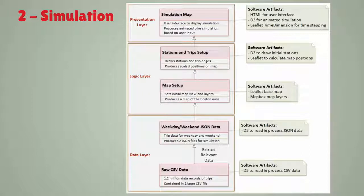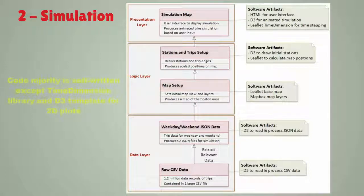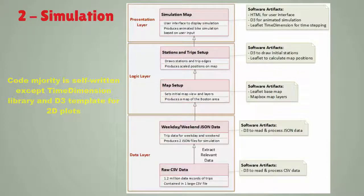The second component of the code does the bike simulation of a typical weekday and weekend, representing the average annual commute behavior calculated previously. This component sets the geospatial map around the Boston area and draws the 180-plus bike stations on the map using their GPS coordinates. It also draws the bikes and animates their simulation movement. The majority of the code I wrote myself, with the exception of the Time Dimension library and some D3 template code I customized to produce the 2D plots.